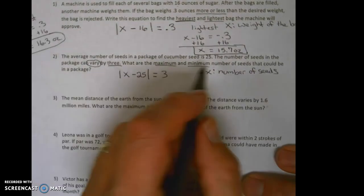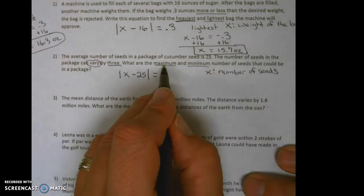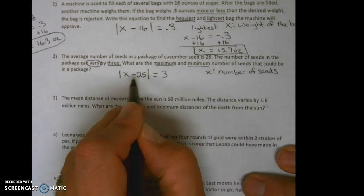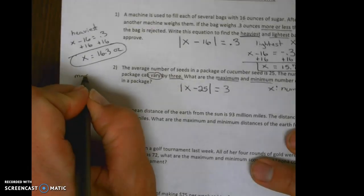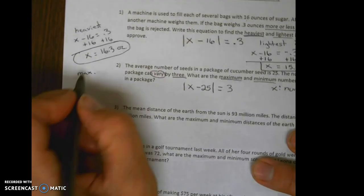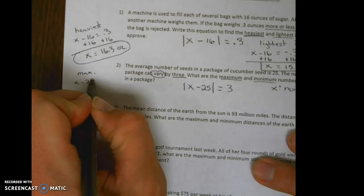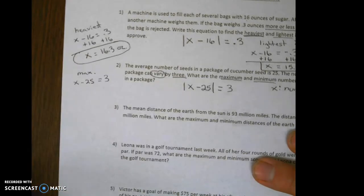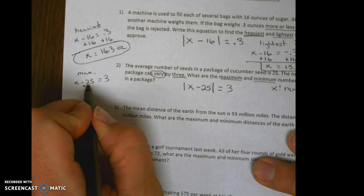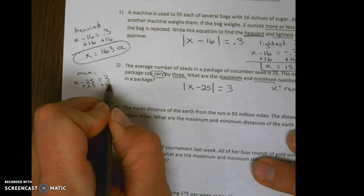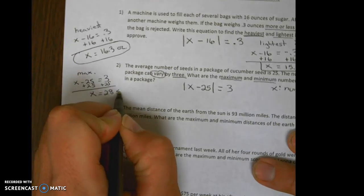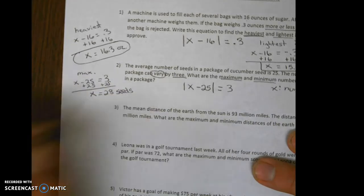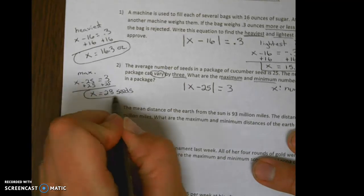So let's do the maximum. The maximum is going to be our above. So we're going to have x minus 25 equals 3. Adding 25, we get x equals 28. So the maximum number of seeds we could have in a package is 28 seeds.